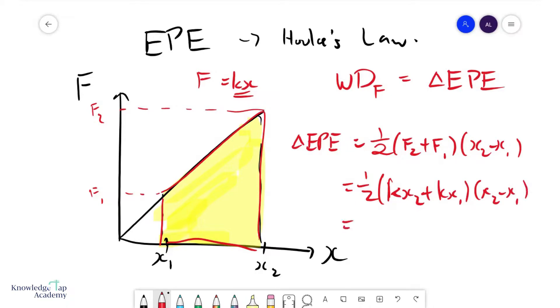We can factorize out K, so that would be half K times X2 plus X1 times X2 minus X1. And of course, we know that that simply is half KX2 squared minus X1 squared. And that's the generic formula for the change in EPE for an object that obeys Hooke's law.